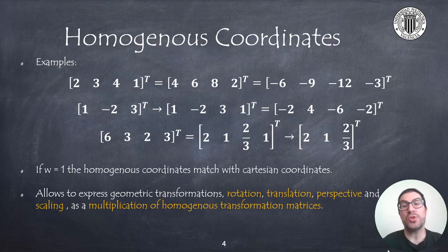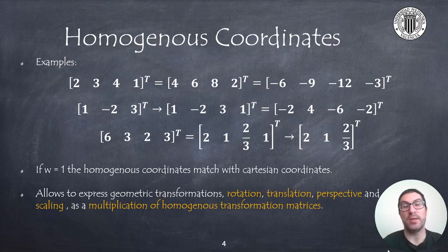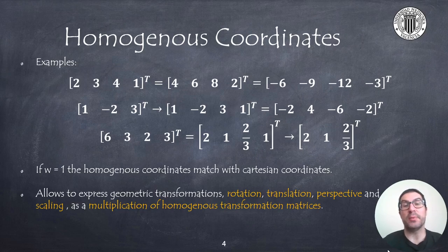It also shows how to convert a point in Cartesian coordinates to a homogeneous point by adding a one at the end, or just the opposite, by dividing the homogeneous coordinates by its scaling coordinate, we can obtain the original Cartesian coordinates of the 3D point. As can be observed, if the scale is 1, then the first three coordinates are the same as the Cartesian coordinates.